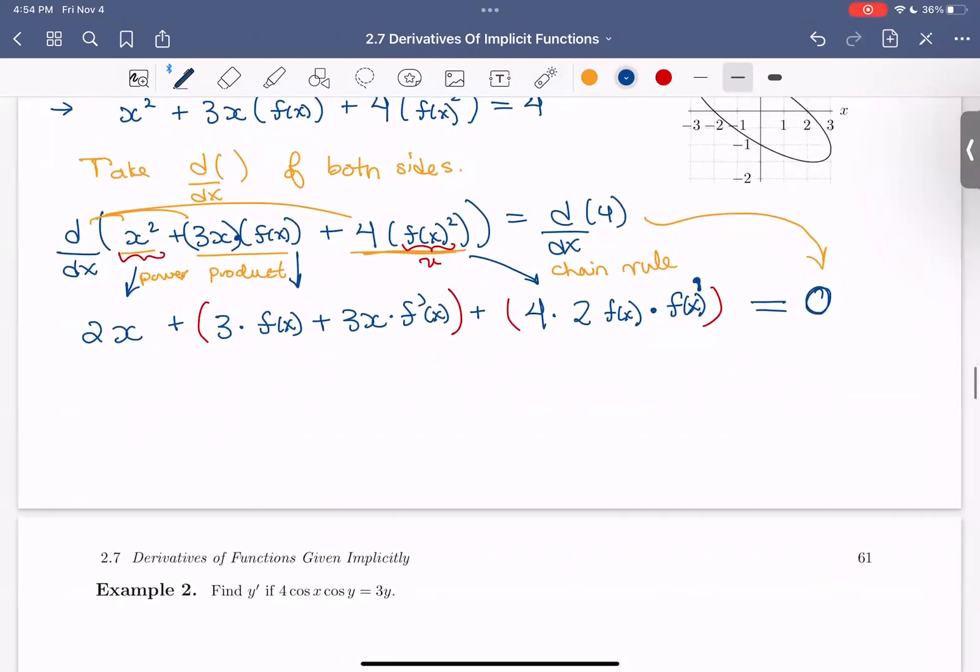So now let's clean this up again by substituting back y for f of x. So there we get 2x, and now I'm just adding here and here. So I actually don't need these parentheses anymore, but I like to use them so it's clear where each of these terms comes from. So I can just write 2x plus 3y plus 3xy prime plus 8yy prime equals 0. So I really encourage you to pause the video on this screen and make sure it's clear where each term is coming from.